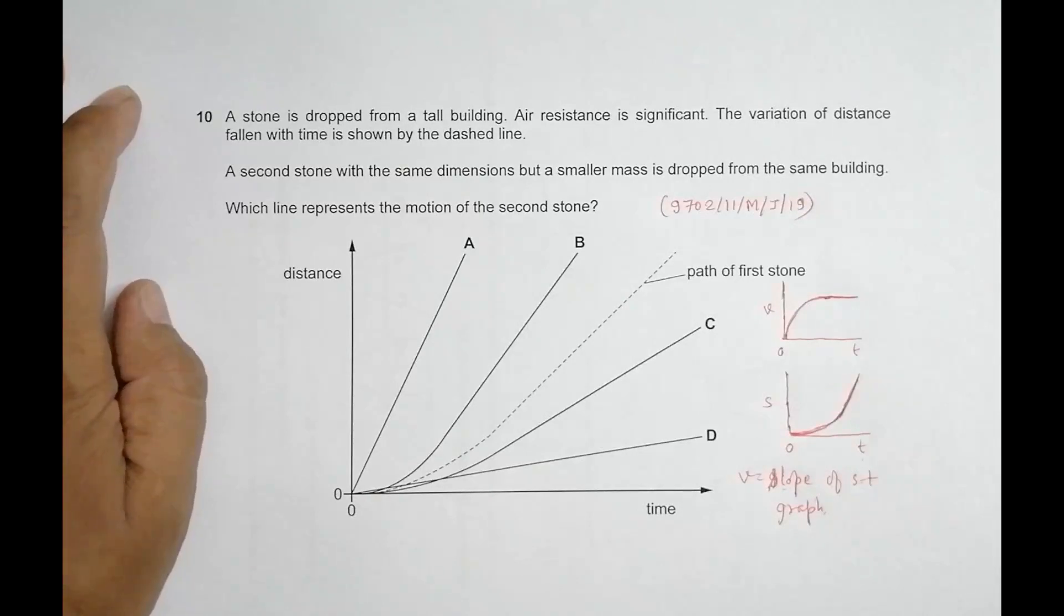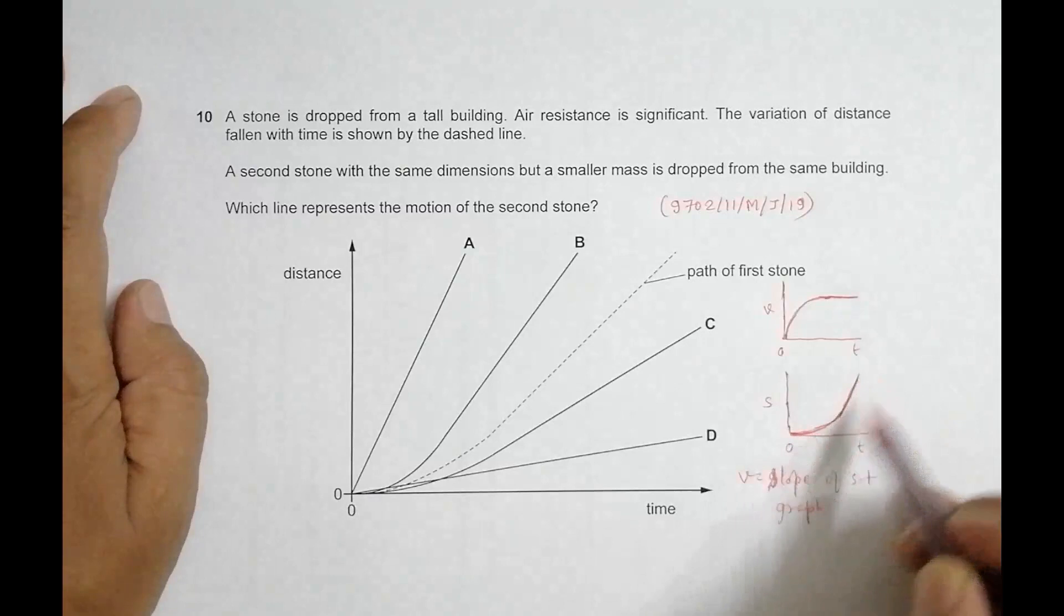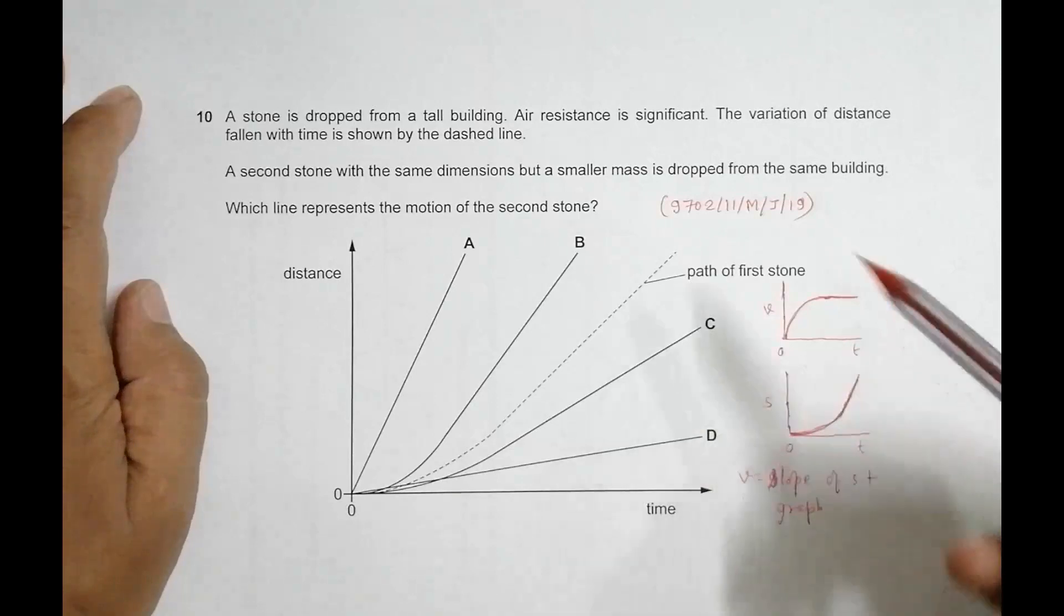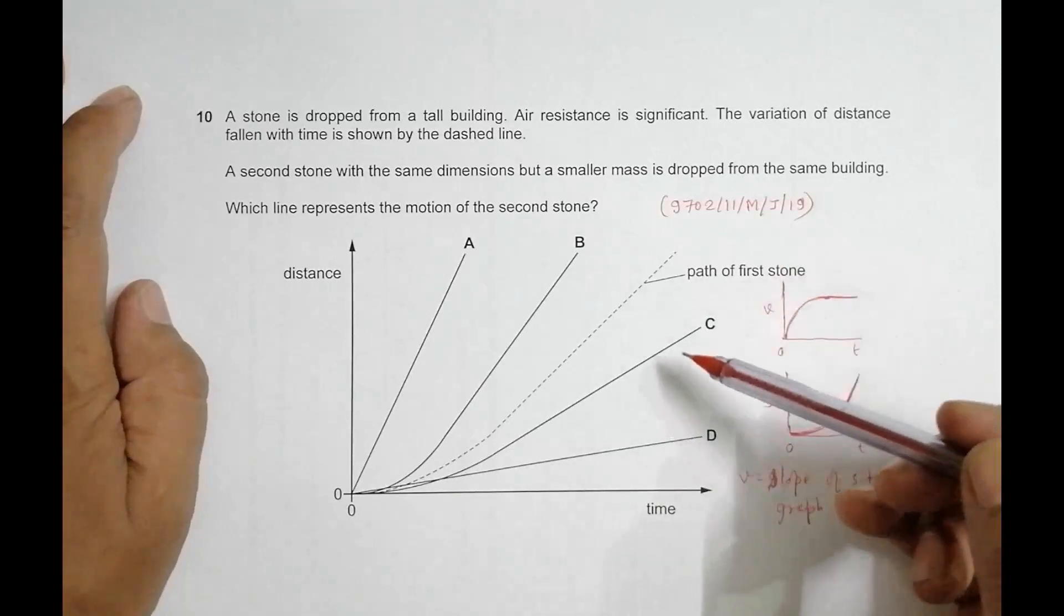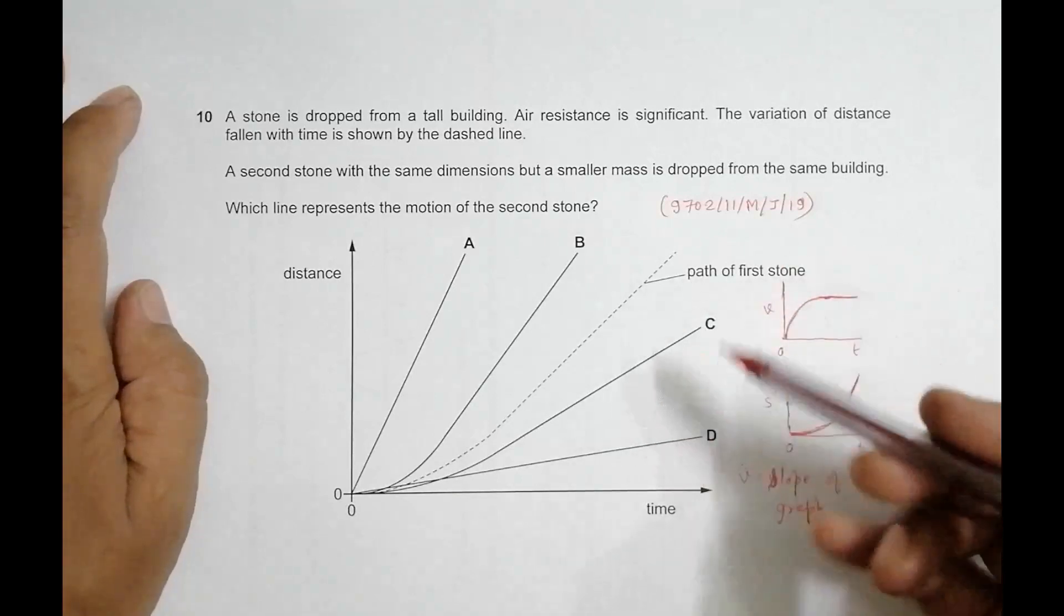Velocity less means that the slope should be less. So the only two things where the slope is less are C and D. B disqualifies and A also disqualifies. The tussle is now between C and D.